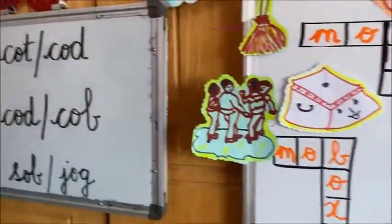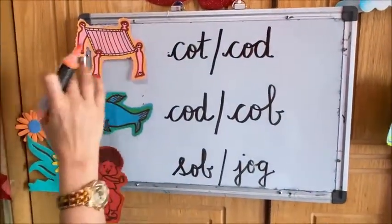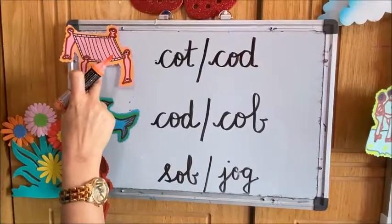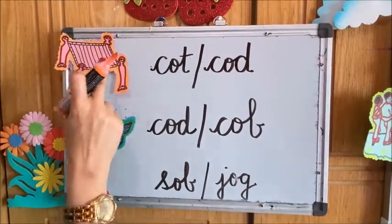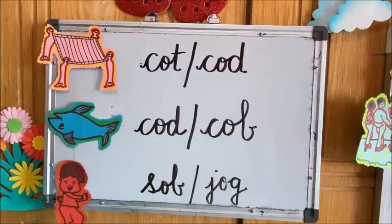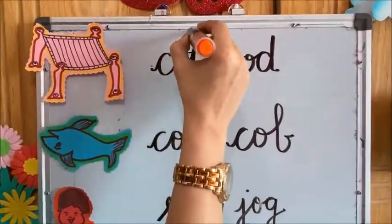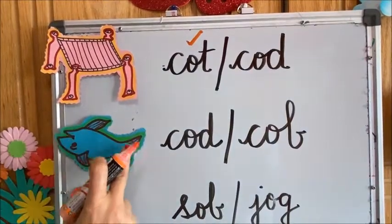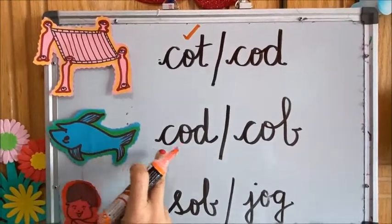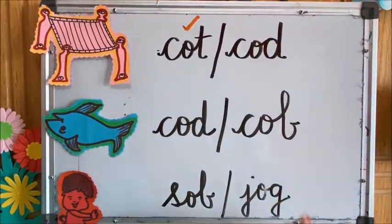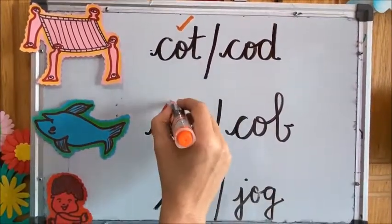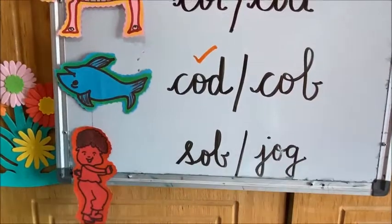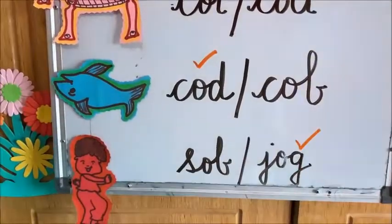Now here I have three pictures — one picture is given, two words are given. You must first find out what the picture is. This is caught. Where is caught — this one or this one? The first one, isn't it? So you tick it. Now what is this? This is the fish and its name is cod. Where is cod — here or here? Here. Very good. Now what is he doing? He is jogging. So is it sob or jog? It is jog, isn't it? Alright.